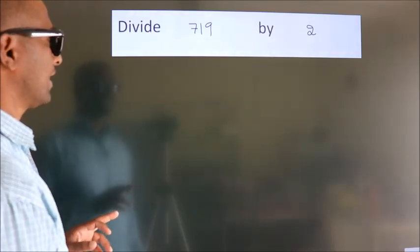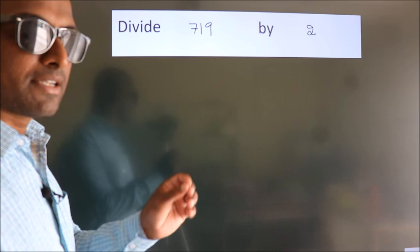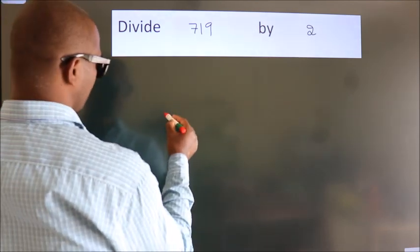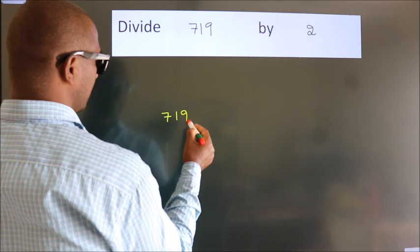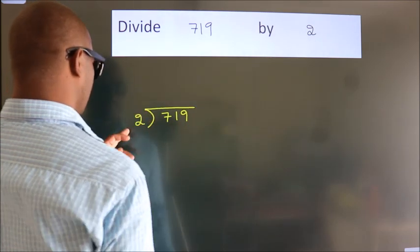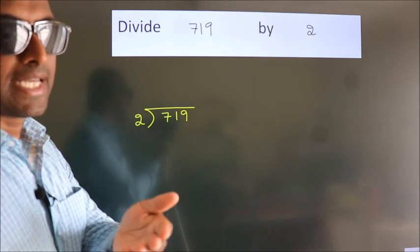Divide 719 by 2. To do this division, we should frame it in this way: 719 here, 2 here. This is your step 1.